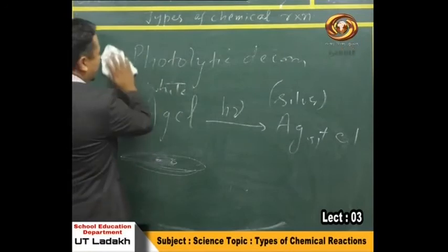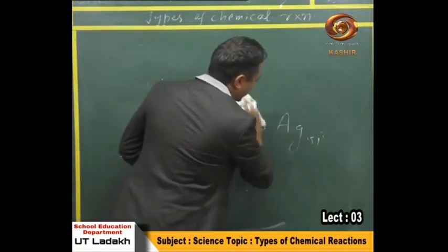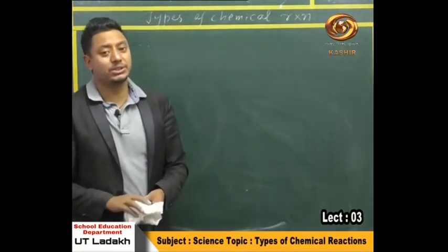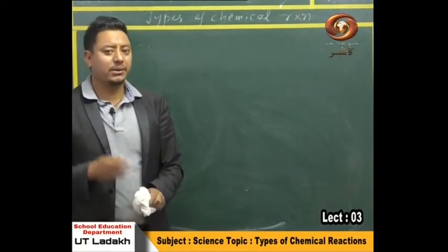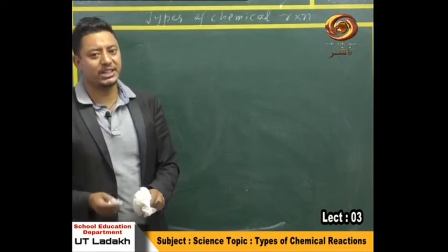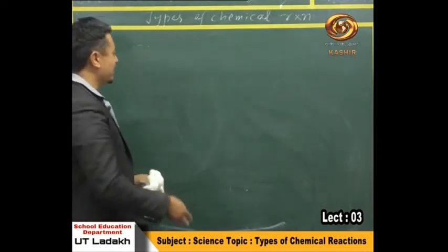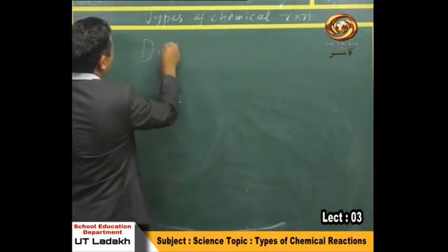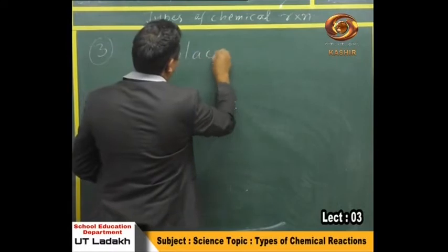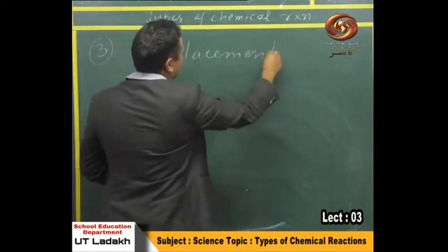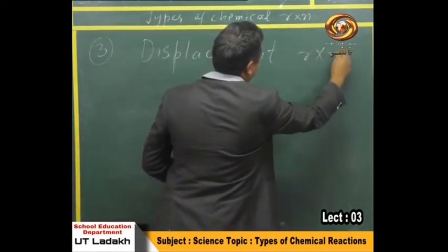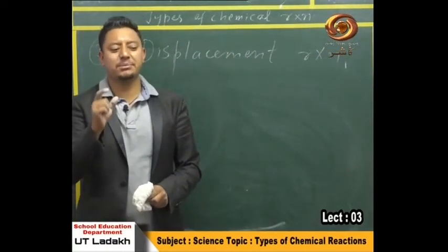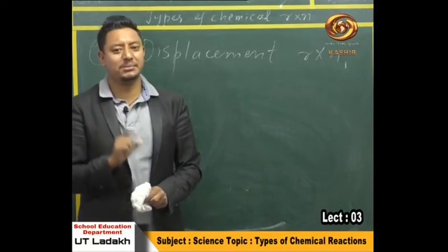So we have already done two types of chemical reactions — combination reaction and decomposition reaction, further separated into three types. The third type of chemical reaction is displacement reaction. As the name suggests, in this type of reaction something is getting displaced.